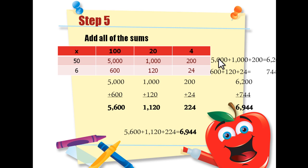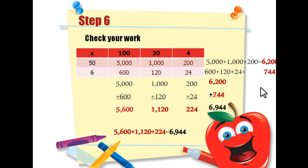Now we're going to check our answers by adding the sums together of the rows. 6,200 plus 744 equals 6,944. Now we've checked our work and we found that we've got two of the same answers. So we know that we've solved the problem correctly.